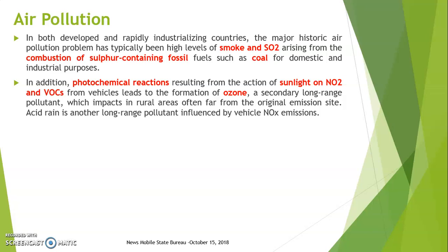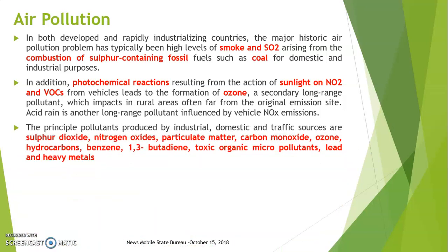There is also secondary long-range pollution which impacts rural areas, often far from original emission sites. Another long-range pollutant is acid rain, influenced by vehicle nitrogen oxides. The principal pollutants present could be sulfur dioxide, nitrogen oxide, particulate matter, carbon monoxide, ozone, hydrocarbons, benzene, 1,3-butadiene, toxic organic micropollutants, lead and heavy metals.